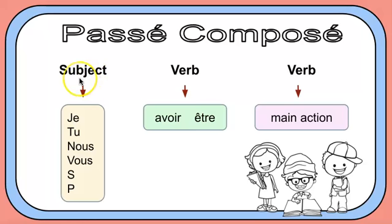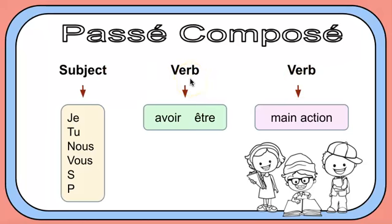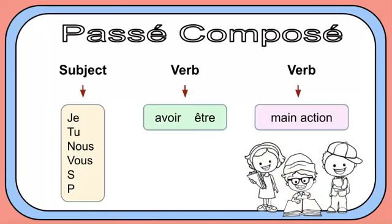To form the passé composé, you have first a subject, and then you have two parts to the verb. The first verb is called the auxiliary, and the second verb is called the past participle, and this is the main action. For example: ate a sandwich, studied French, went to school.